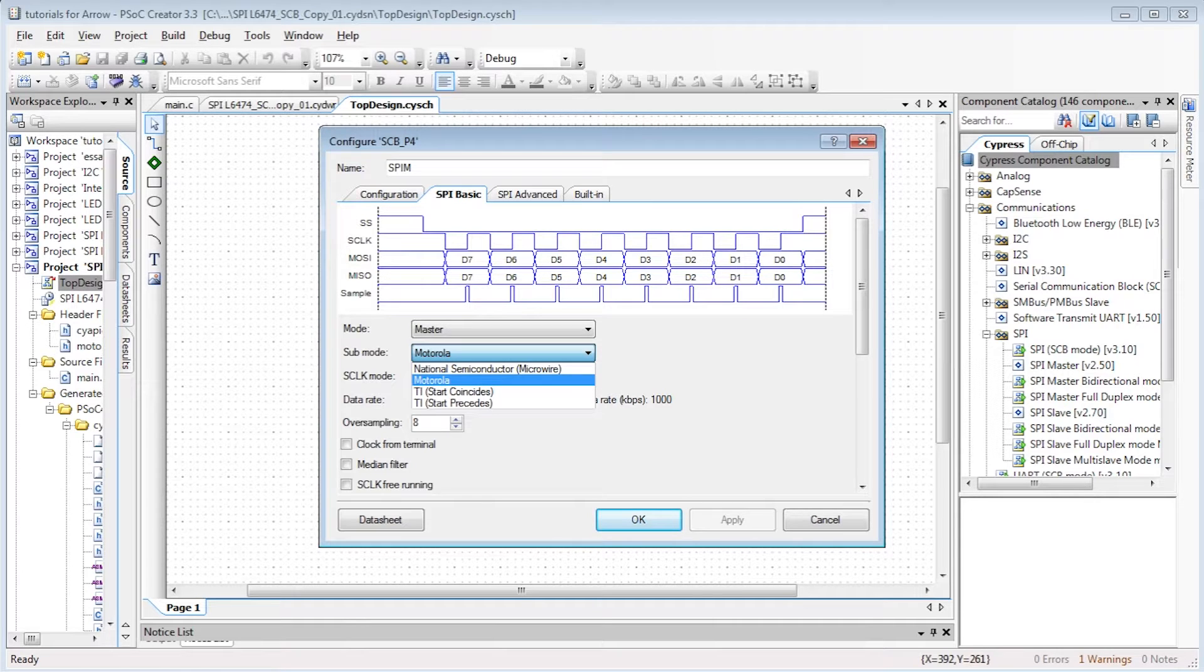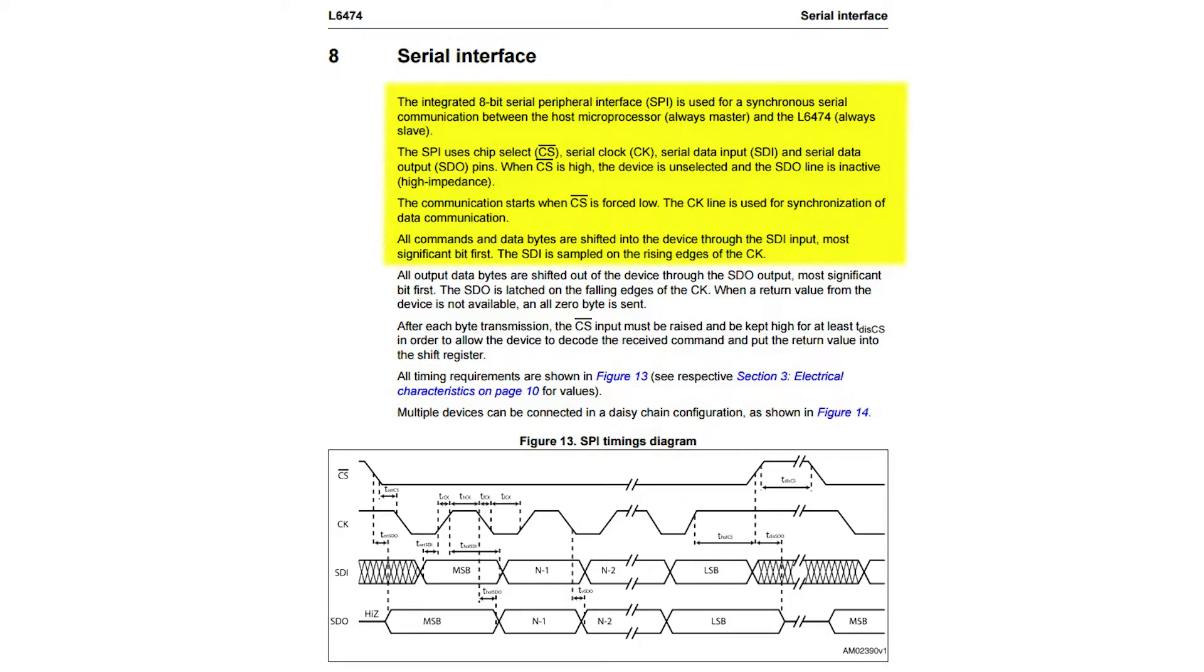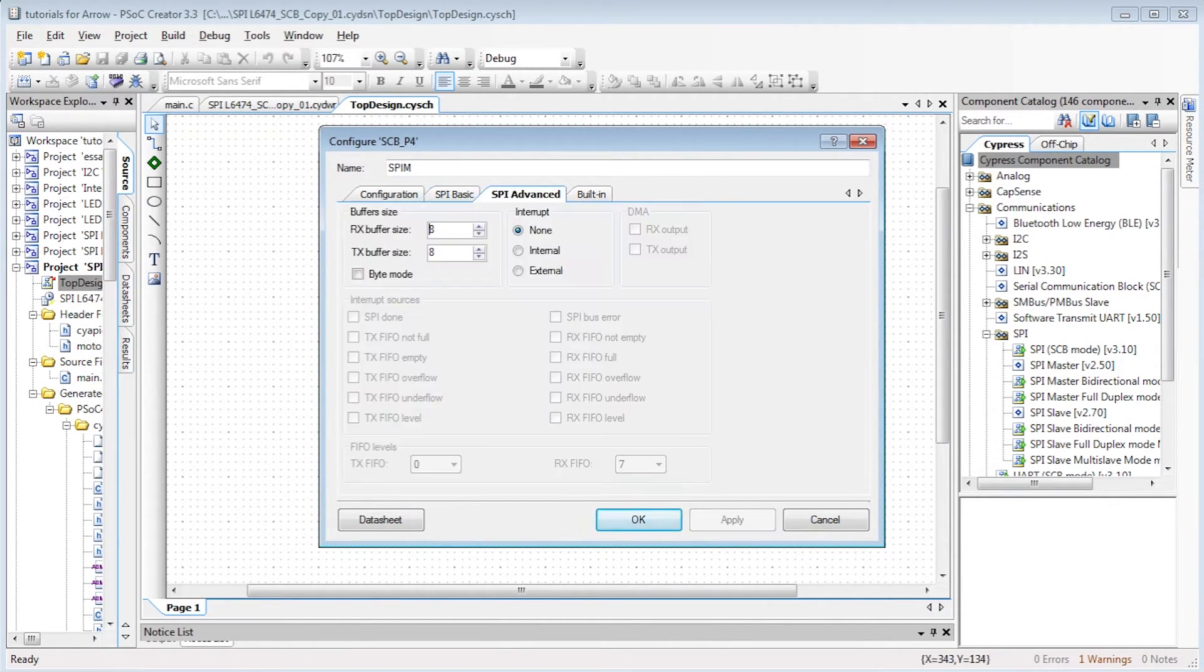TI is an SPI version too, so be careful. The datasheet of the L6474 states the SDI is sampled on the rising edge of the clock and the SDO is latched on the falling edge of the clock. In SPI specification, that is translated by CPHA equals 1 and CPOL equals 1.